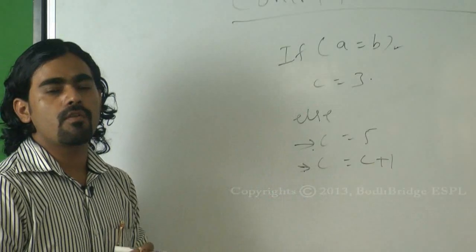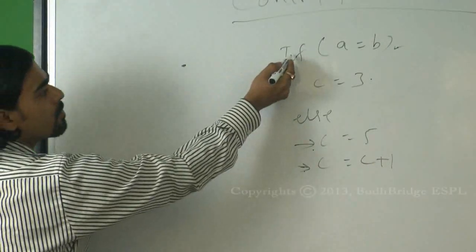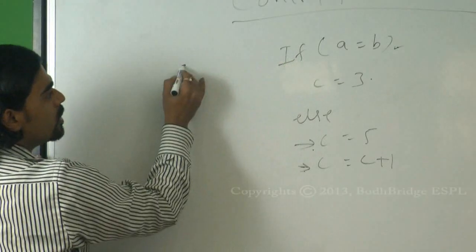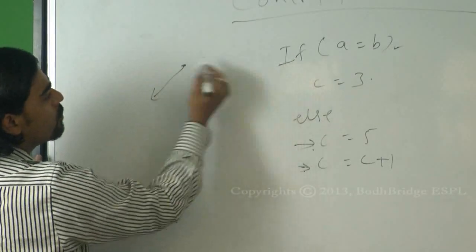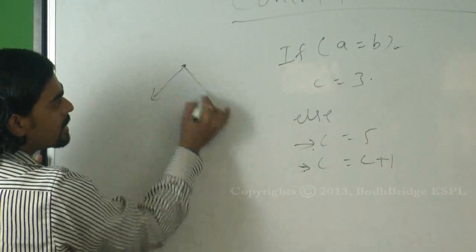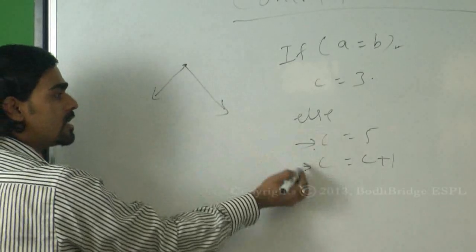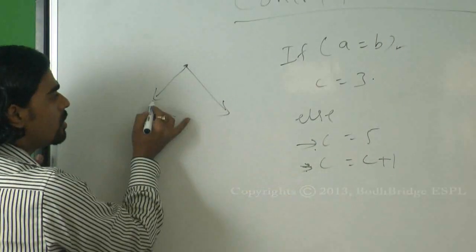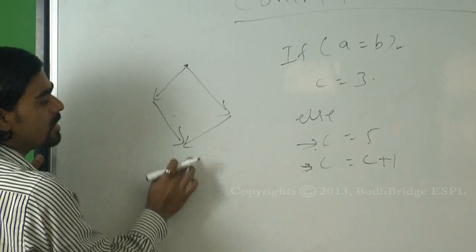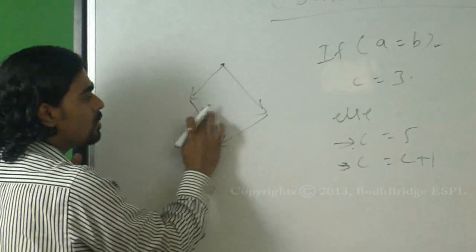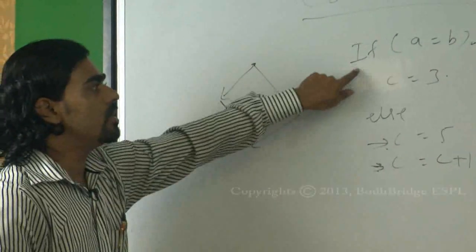How to draw the graph for it? My execution is starting from here. If it is true, it will execute something like this. If it is false, it will go somewhere else and come back. In both scenarios, this line is going to be executed — something like this. So this is the control flow graph for this particular code.